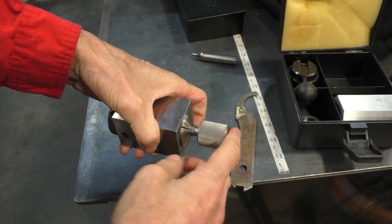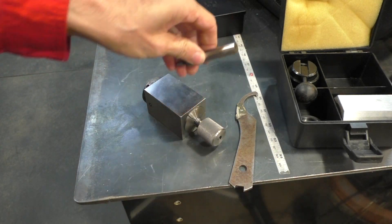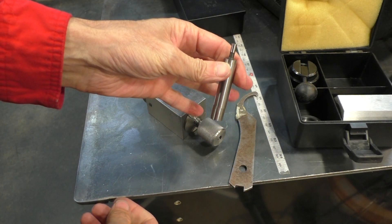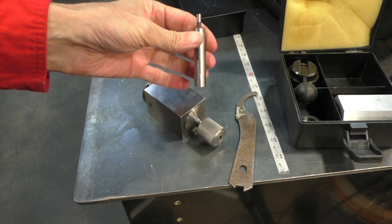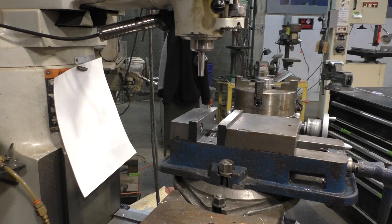Now we take this over to the mill and we use our center finder. And that's how we're going to find the center. Now I need to get my collet block, put it into the vise so I can find the center of the piece.